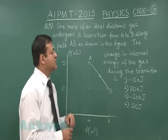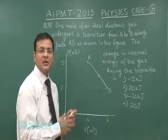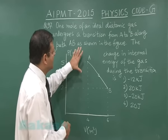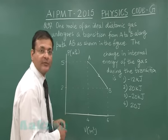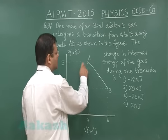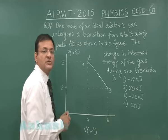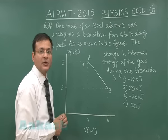The change in internal energy of the gas during the transition. This is a very standard kind of question. Let us suppose I assume that the temperature of A is T. So you see if you use the ideal gas equation PV is equal to nRT.